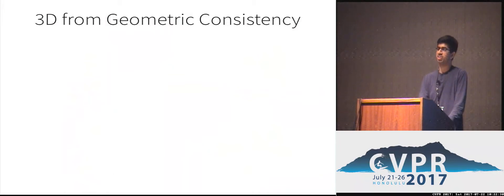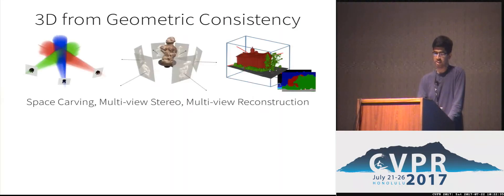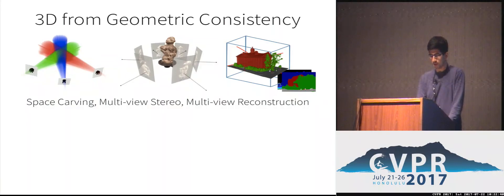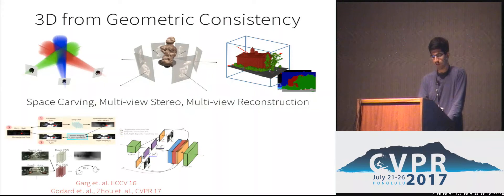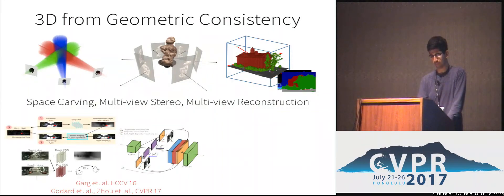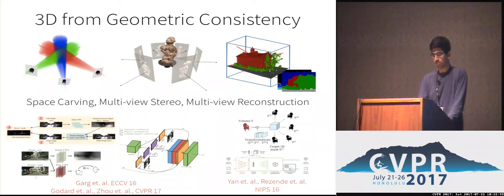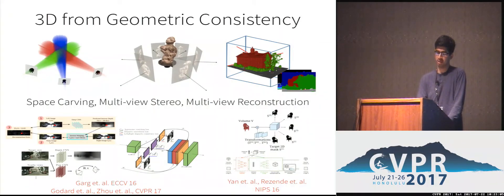The idea of computing 3D shapes consistent with 2D observations is not new — the rich area of multi-view reconstruction has successfully leveraged this idea over the years. However, unlike classical approaches, at test time we only have a single input image, and we want to incorporate such consistency in a CNN framework. Some recent approaches have pursued such incorporation for depth prediction rather than full 3D prediction. Two concurrent works also examined the volumetric prediction task, but unlike ours, their formulation was specific to foreground mask supervision, whereas our formulation is more general.